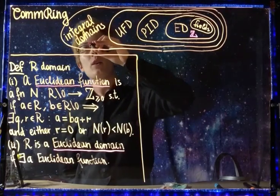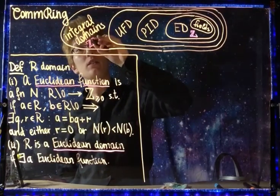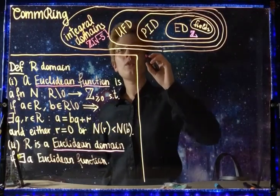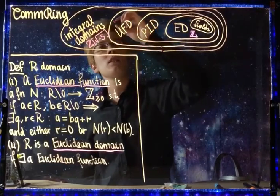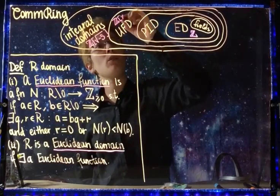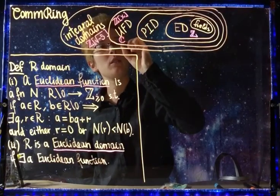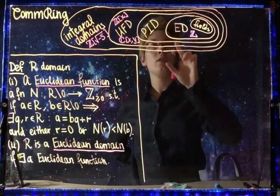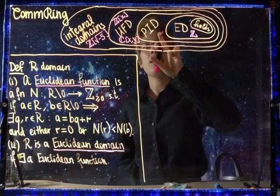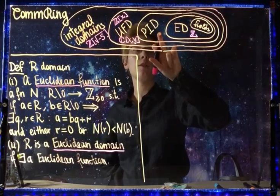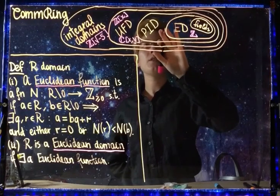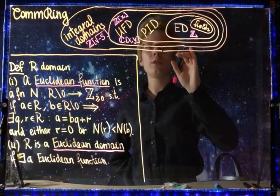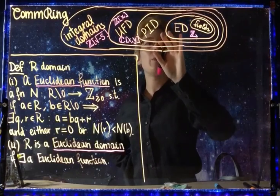We saw an example of an integral domain which is not a UFD: Z[√-5]. We saw examples of UFDs which are not PIDs, for example polynomials with integer coefficients or polynomials in two variables. The counterexamples of Euclidean domains which are PIDs can be quite cryptic, and the important thing is that they exist. I can point you to some readings to learn about these counterexamples.